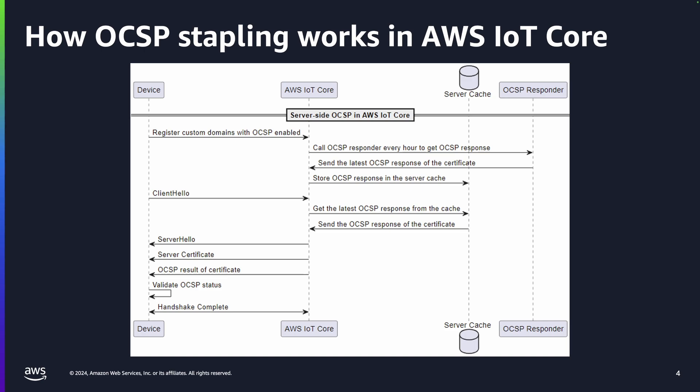Four, the device sends a client hello message to initiate the TLS handshake with AWS IoT Core. Five, AWS IoT Core gets the latest OCSP response from the server cache. Six, the server sends the server hello message to the device. The server also sends the server certificate and the certificate status to the client. Seven, the device validates the OCSP server status. And finally, eight, the TLS handshake is completed.